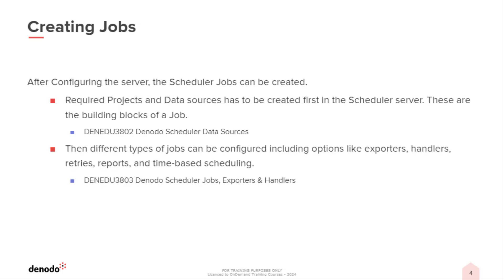After a Scheduler server is configured, Scheduler jobs can be created. The primary component of any job is the data sources, which are used to enable access to different sources where the data is located. In the module Denodo Scheduler Data Sources, we will learn about the data sources available in the Denodo Scheduler and about the purpose of each source type. Each data source will also be associated with a project, and this module also covers how data sources are managed within the projects.